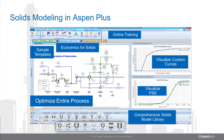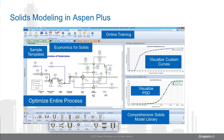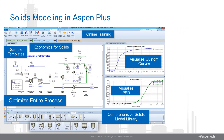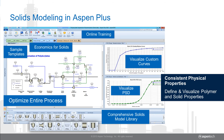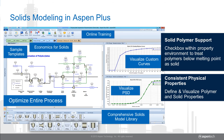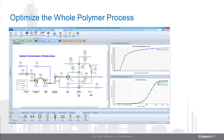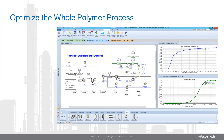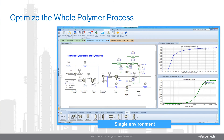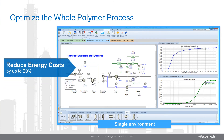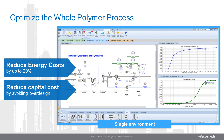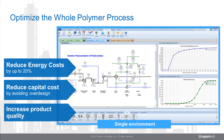To help you get started, AspenTech offers online training and example files. Enjoy consistent polymer properties with the ability to define and visualize polymer and solids properties simultaneously. With a full polymer modeling solution combining both Aspen Polymers and solids modeling in Aspen Plus available in a single environment, you can improve your process by reducing energy costs, capital costs, and increasing product quality by predicting and tracking moisture content in the particle size distribution.